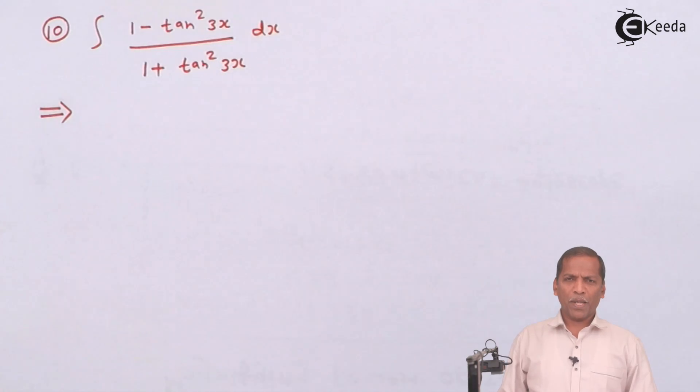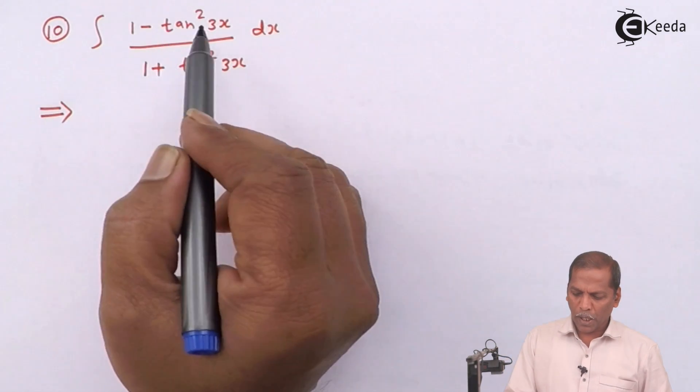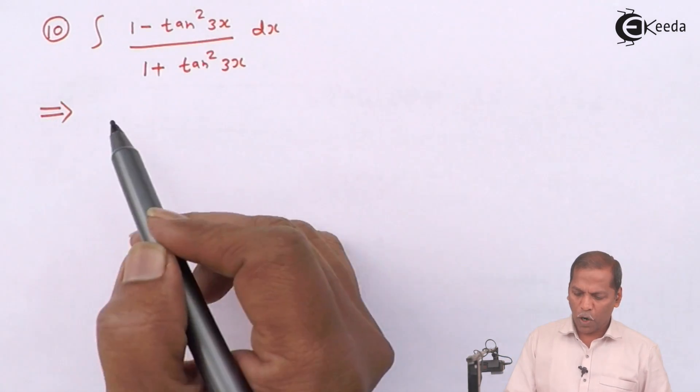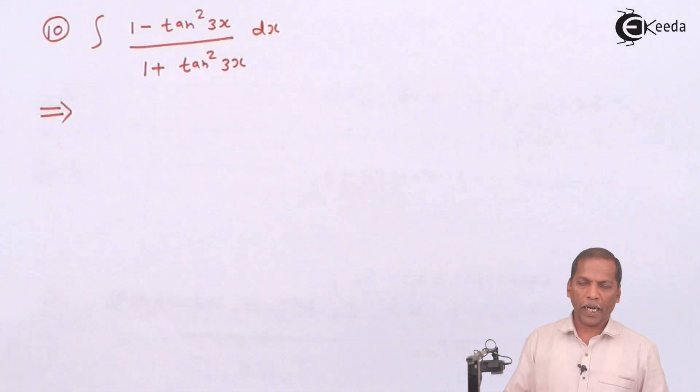Hello friends, now we see the problem number 10 which is based on rules of integration of chapter integration. The problem number 10 is integral 1 minus tan square 3x upon 1 plus tan square 3x into dx.